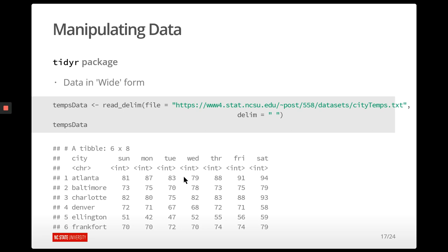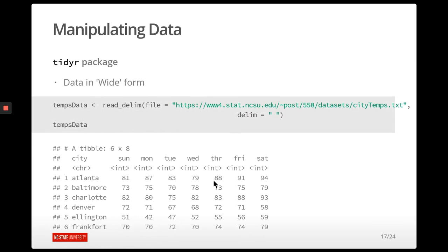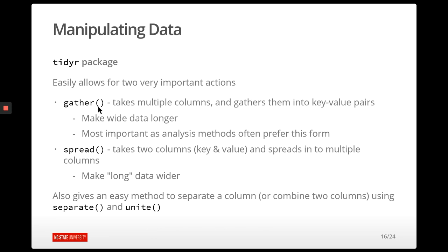Generally speaking, the algorithms we run — machine learning, regression, whatever we're doing to analyze our data — usually require data to be in long format, where every row represents one observation. A lot of times data comes in wide format from Excel because it's easier to look at, but we need to switch it to long format to run our analyses. The gather and spread functions allow us to go back and forth between long and wide data.